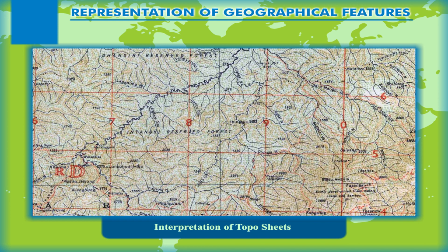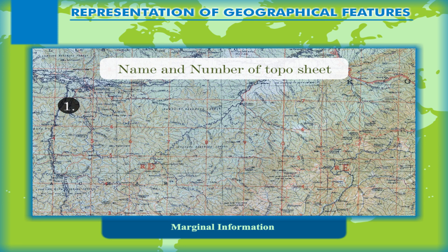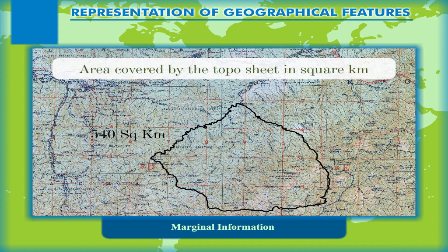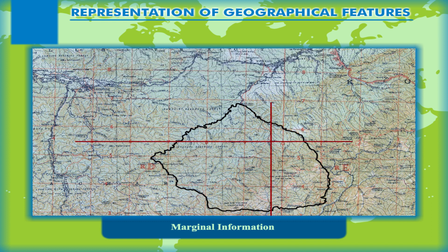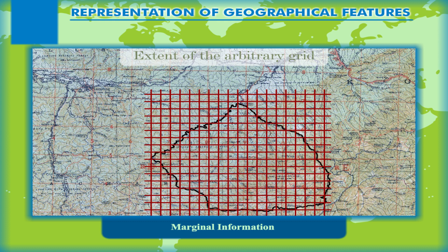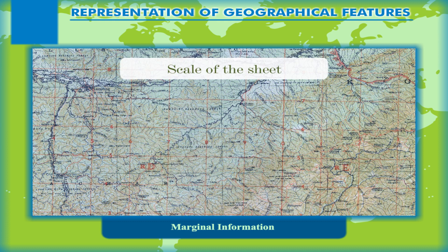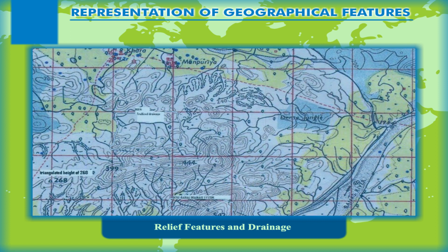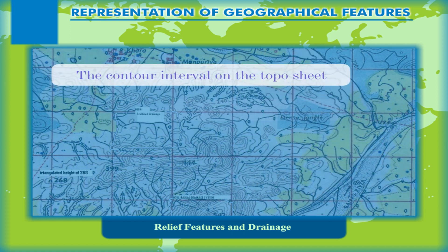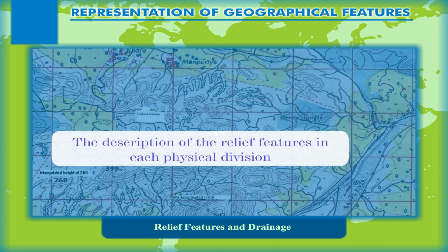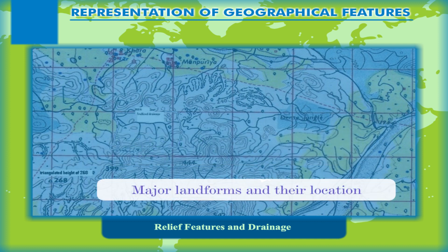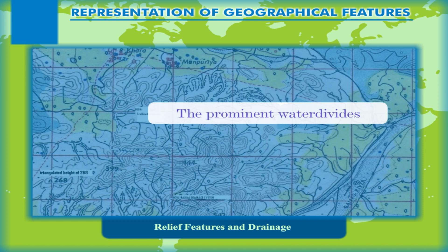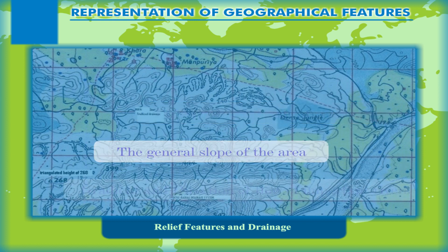Interpretation of Topo Sheets. The study or interpretation of a topo sheet can be done under the following heads. Marginal Information includes the name and number of the topo sheet, area covered in square kilometres, the latitudinal and longitudinal extent, extent of the arbitrary grid, scale of the sheet, and any special information. Relief Features and Drainage includes the contour interval, physical divisions, description of relief features in each physical division, major landforms and their location, the drainage pattern, prominent water divides, general slope of the area, and the gradient and direction of flow of important rivers.